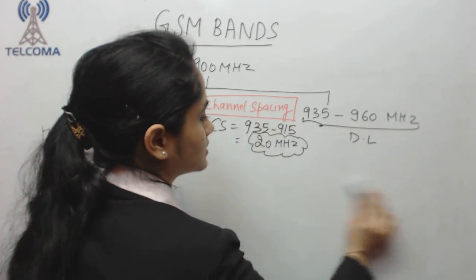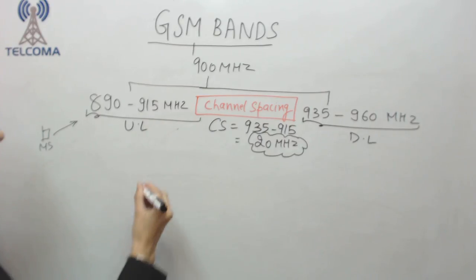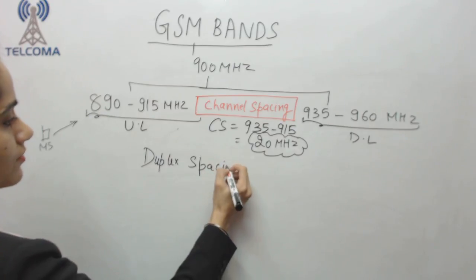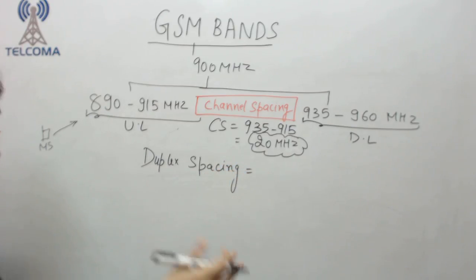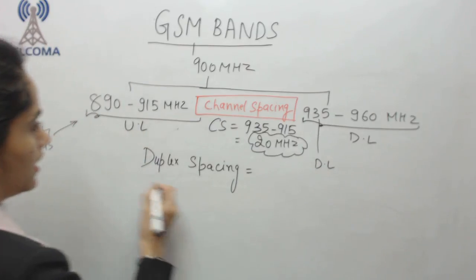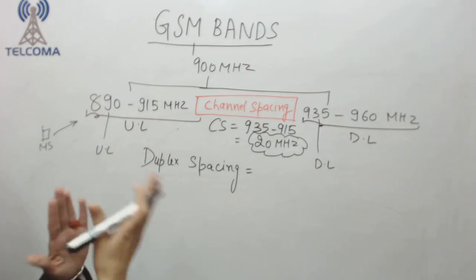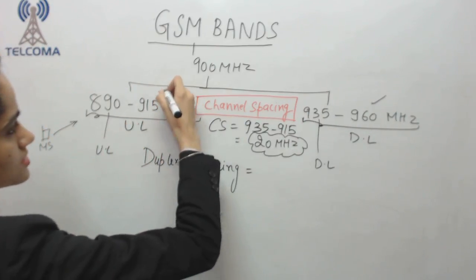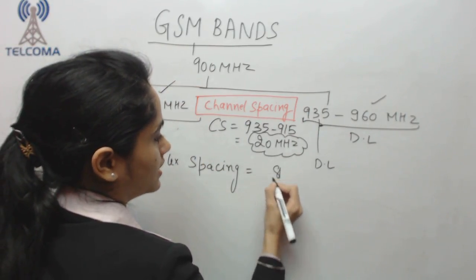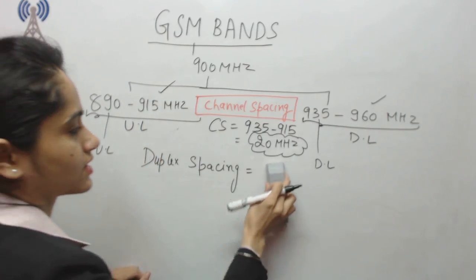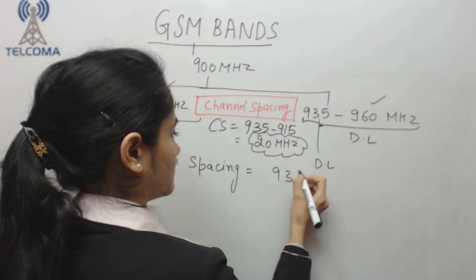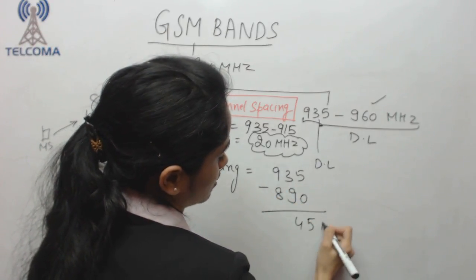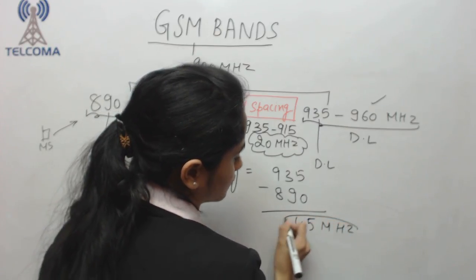Other than channel spacing, we have the concept of duplex spacing — the space between the first uplink and first downlink frequency. Here, 935 minus 890 equals 45 megahertz, so the duplex spacing in the 900 MHz band is 45 megahertz.